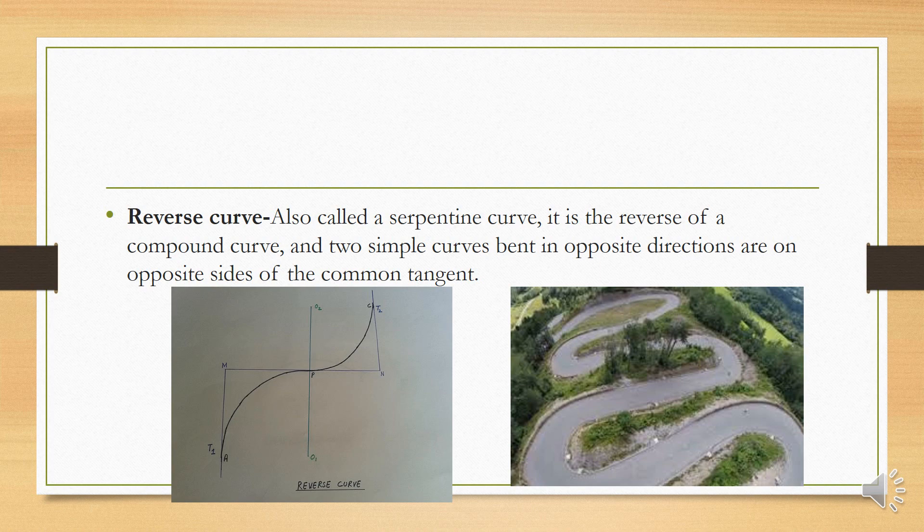From point P to C, the curves turn in opposite directions — this is a reverse curve. This type of curve is used in hill areas where there are many zigzag turns while traveling.